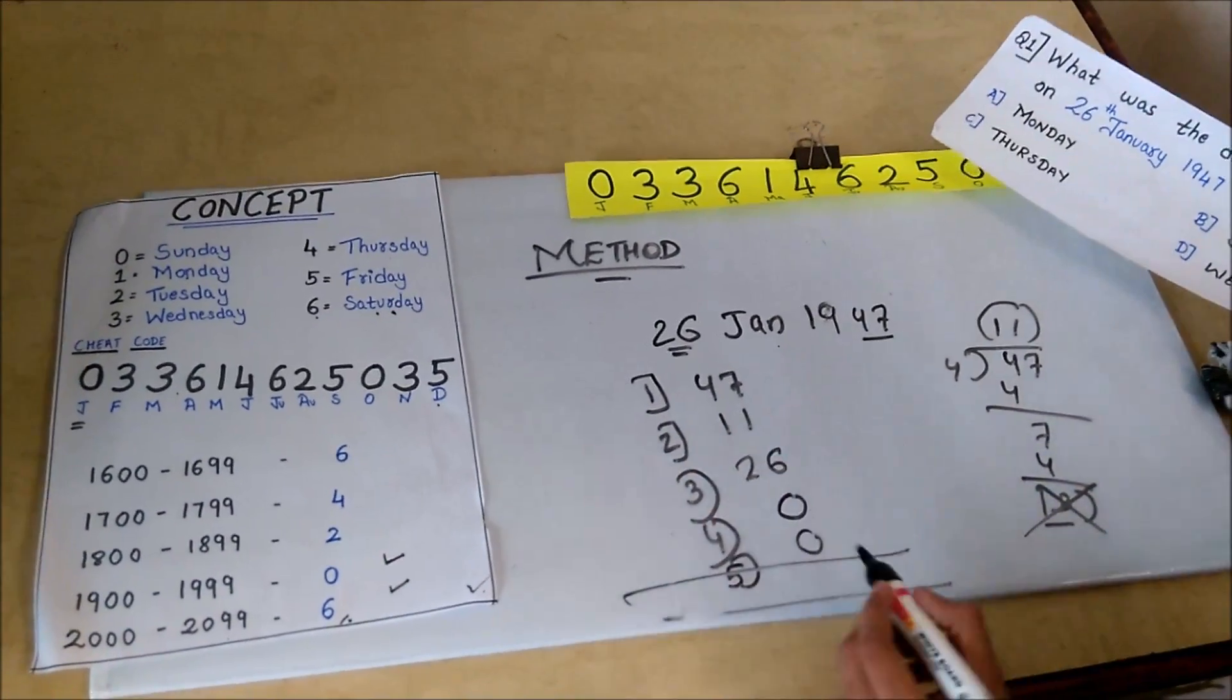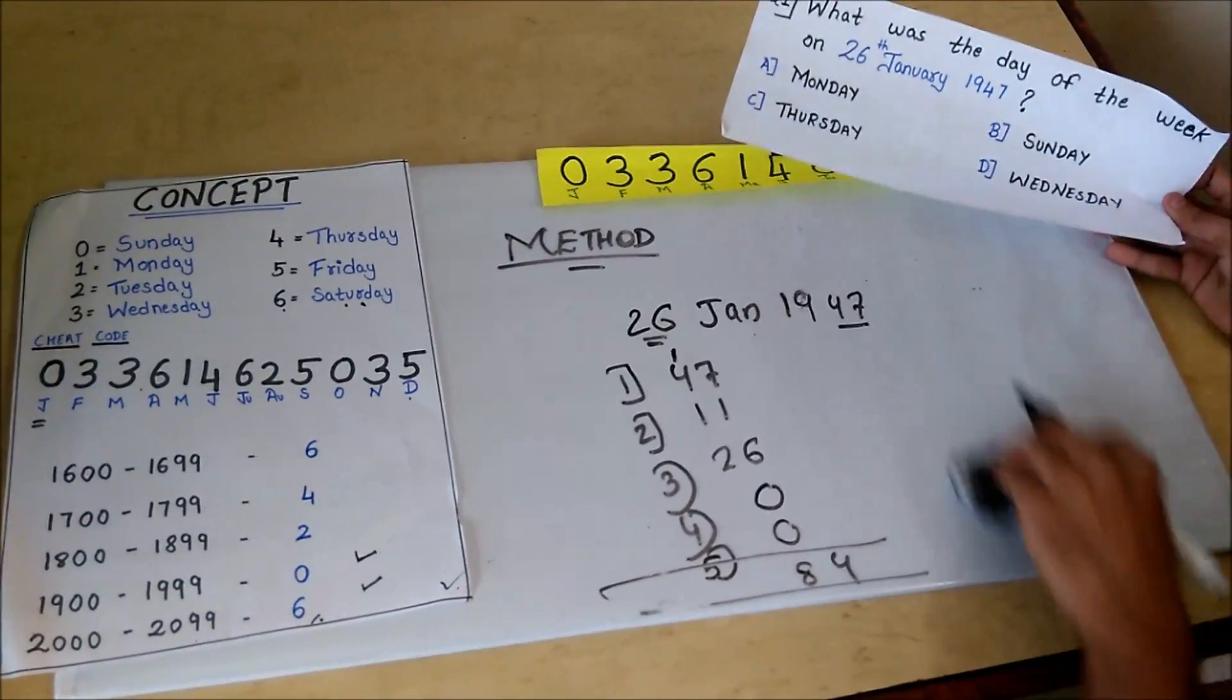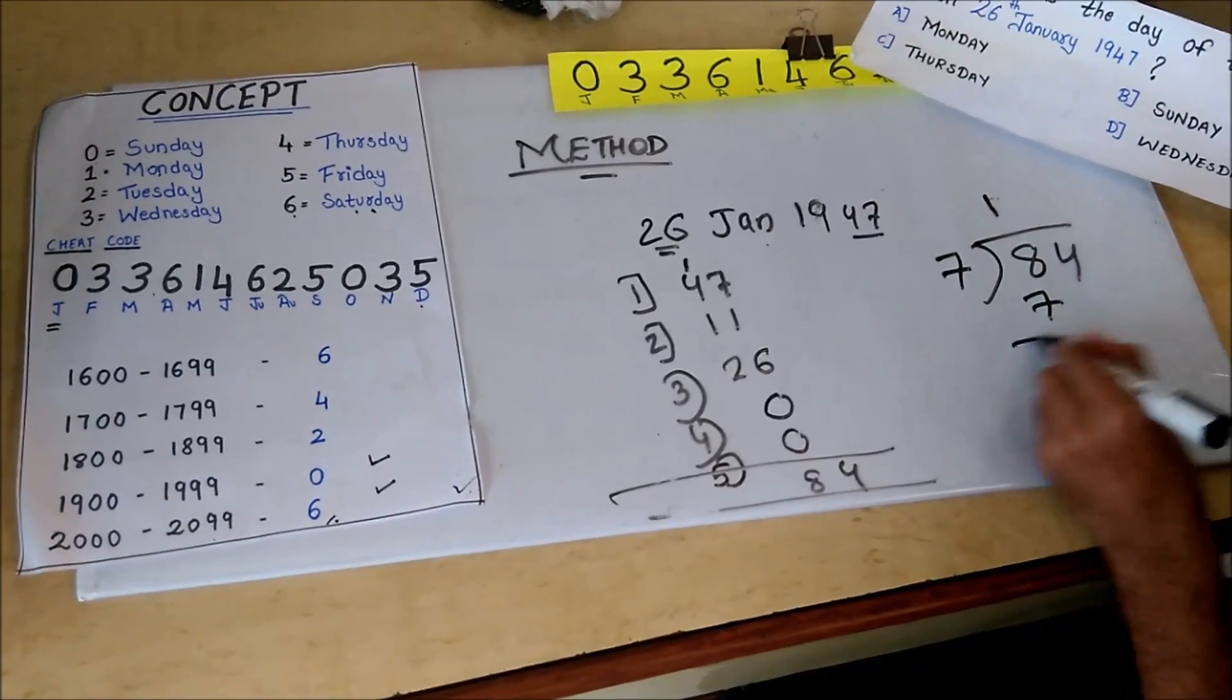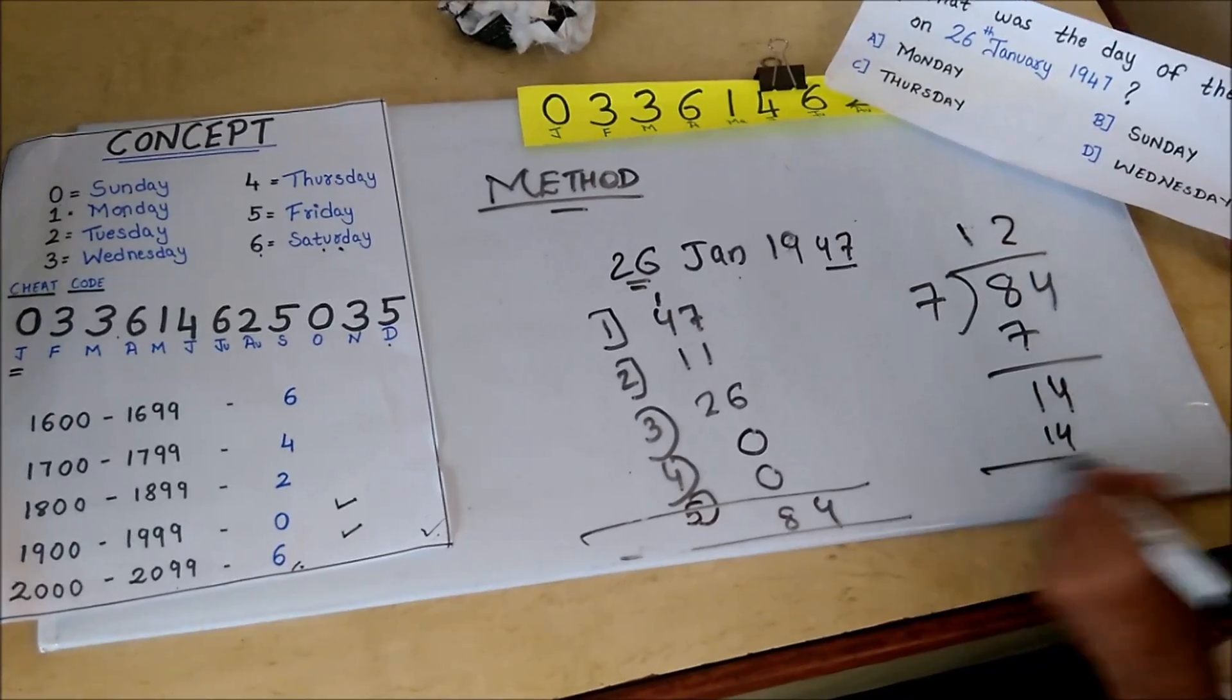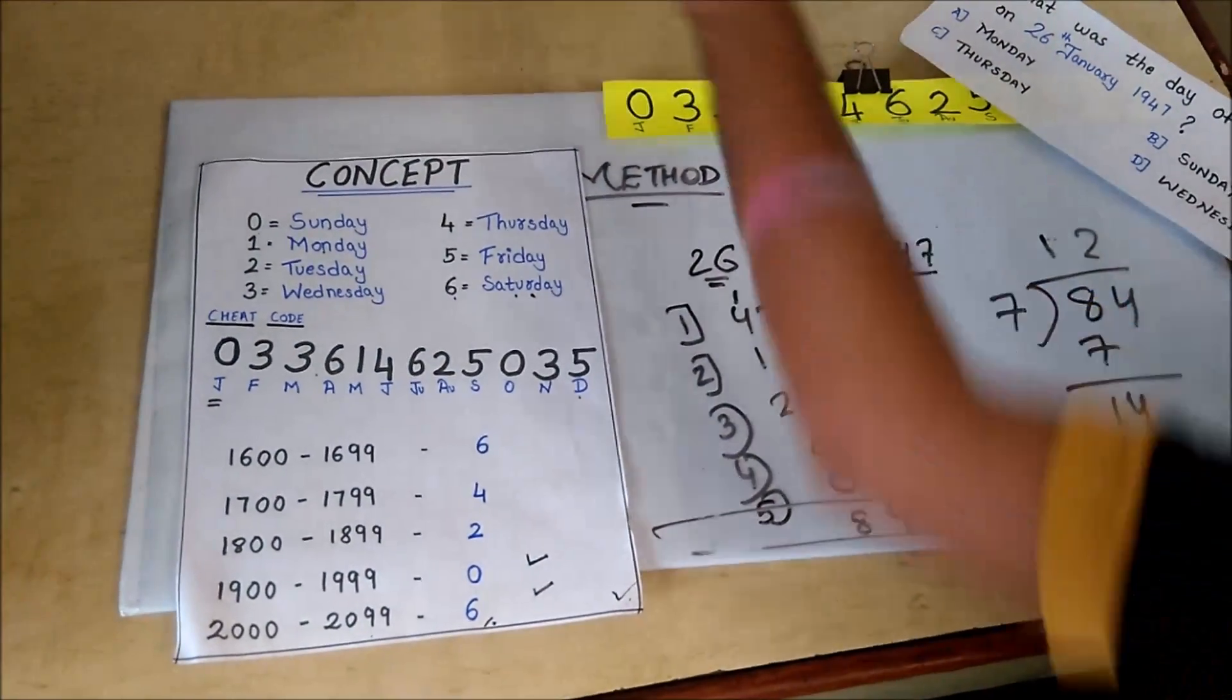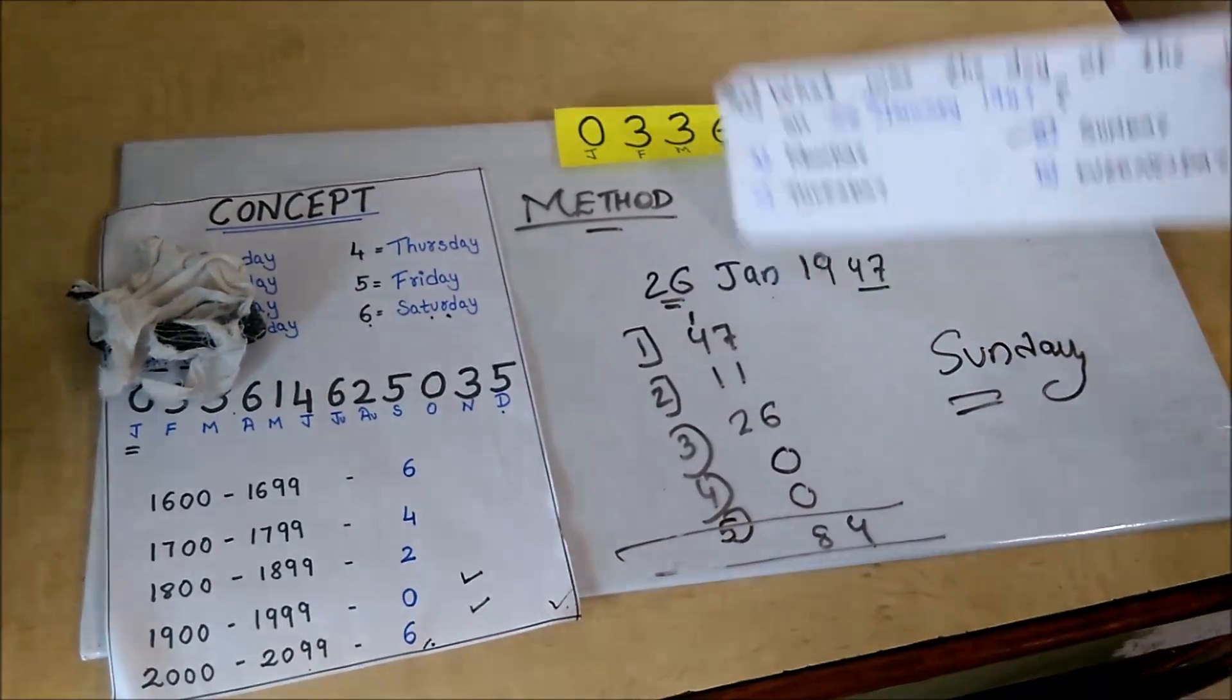7 plus 1 is 8. 8 plus 6 is 14, carry 1. 4 plus 1 is 5, plus 1 is 6, 7, 8. So we get 84. Divide 84 by 7, because there are 7 days in a week. 7 times 12 is 84. Thus we get remainder which is 0. And for 0 the day is Sunday. Hence, our answer is Sunday, which is there in the option. Our answer is B.